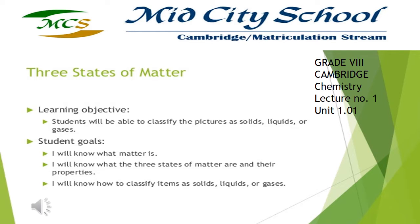Assalamu alaikum students, today we are going to start a new chapter called States of Matter. As you have studied, there are three states of matter studied since childhood. One more state has been discovered but is not widely discussed. The main three states of matter are discussed in the majority. In this chapter you are going to learn about the three states of matter, the differences between them, their characteristics, and also the fourth state of matter, which is plasma.